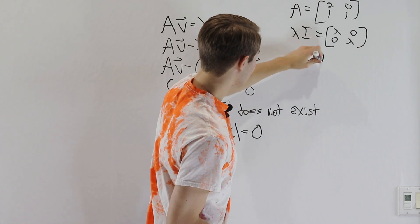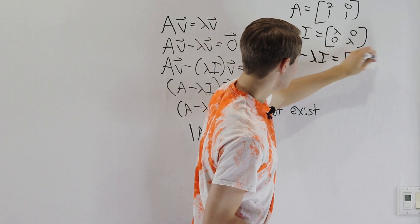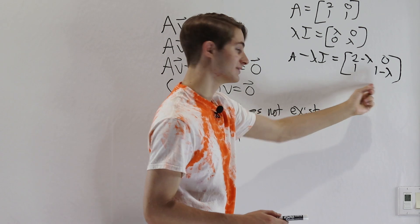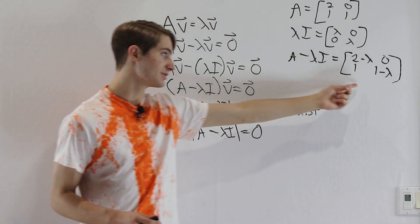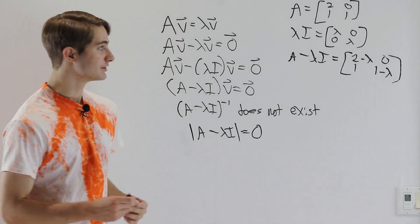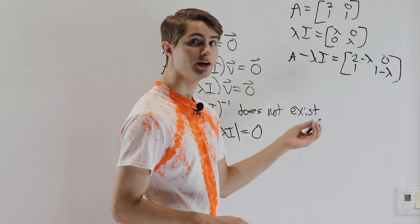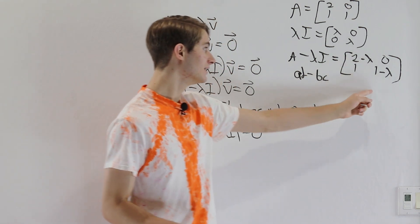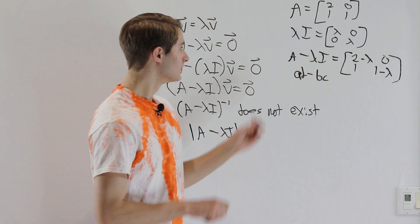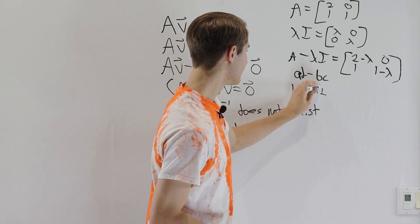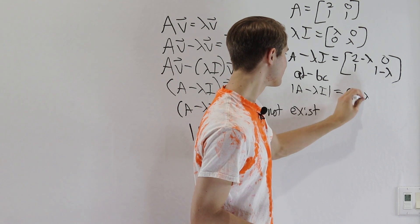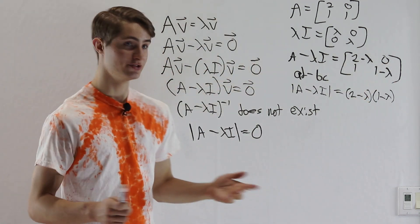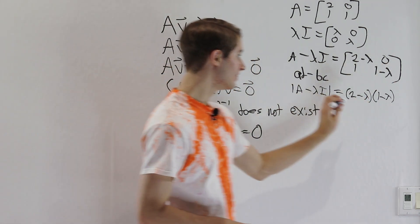Now, if we do A minus lambda I, then our matrix becomes [[2-lambda, 0],[1, 1-lambda]]. So we're just taking the entries of the first matrix, subtracting the entries of the second matrix. And remember, we want the determinant of this matrix to be 0. Now, I haven't gone over the formulas for determinants in my series, but the determinant of a 2 by 2 matrix is going to be equal to AD minus BC, meaning we take the top left times the bottom right minus the top right times the bottom left. So for this one, the determinant of A minus lambda I is going to be equal to (2-lambda) times (1-lambda), which is AD. And then BC is going to be 0 times 1, so that's just 0.